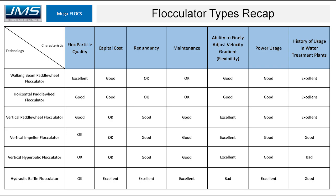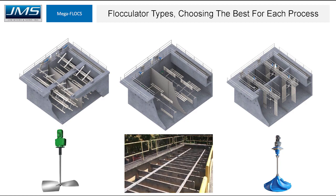As far as power usage, the baffle wall flocculator is supreme with no power usage at all, and the rest all have relatively the same usage of power to create a given gradient. In terms of history of usage in water plants, the paddle wheel units have a long history with many installations throughout the country. The impeller and baffle wall also have good representation, while hyperbolic flocculators have fewer installations in water plants. And with that, I think that wraps it up — I'll take any questions if anybody has any.